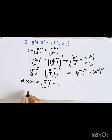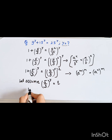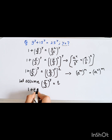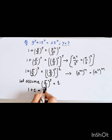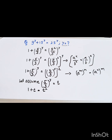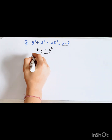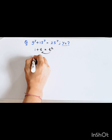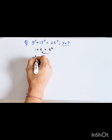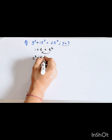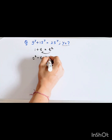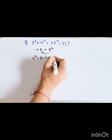With the substitution t = (5/3)^y, we get 1 plus t equal to t squared. Rearranging, we have t squared minus t minus 1 equal to 0.